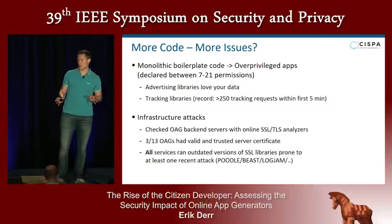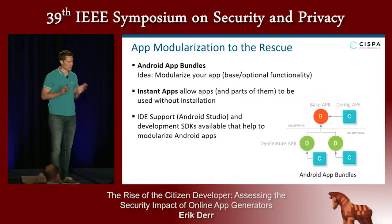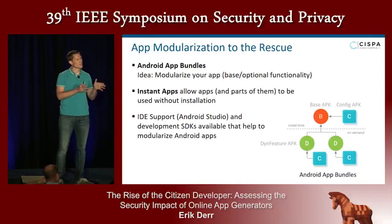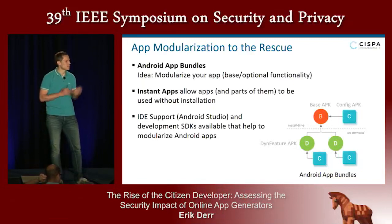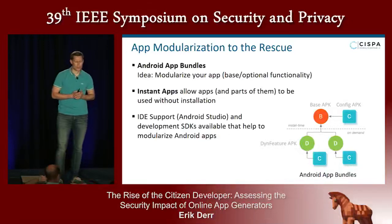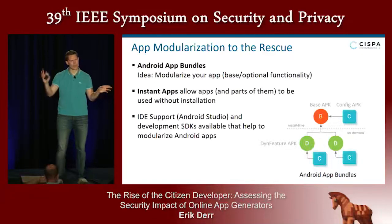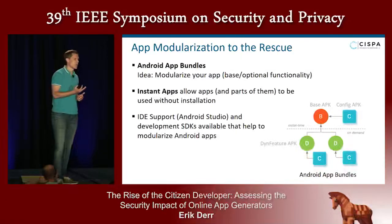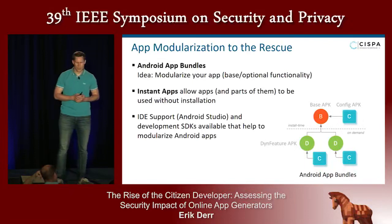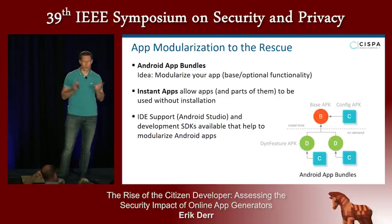By now you might think code generation is a bad idea, but this is only partially true. The main problem is monolithic boilerplate code generation. If we move to module-dependent code generation, this will significantly improve security and privacy in the ecosystem. One approach is app modularization, with two available concepts: Android App Bundle, which splits functionality into core and optional features installable on demand, and Instant Apps, which let users preview your app without installing it. Strong IDE support and development SDKs are now available to help developers achieve this.